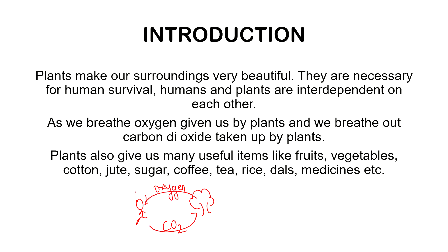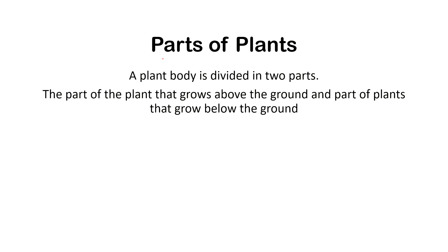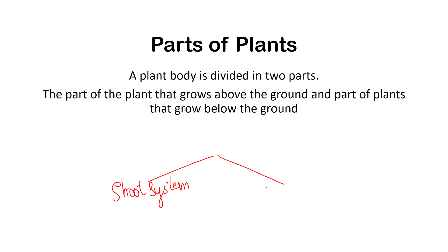Let's discuss the parts of plants. Basically, a plant body is divided into two parts — the first is the shoot system and the second is the root system. I've kept this video short to give you a brief introduction to the shoot system and root system, as this can be a very lengthy topic.